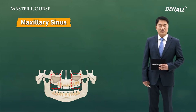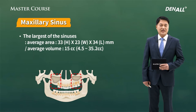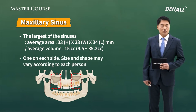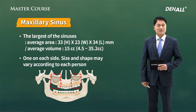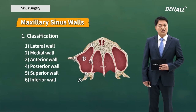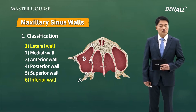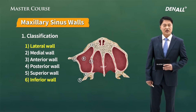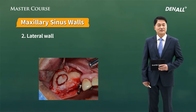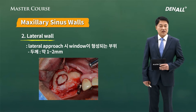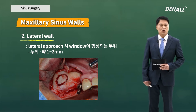The maxillary sinus shape: it is the biggest of the sinuses and the average volume is 15 cc. It exists on the left and right, and size and shape may vary depending on the individual. The most important wall is the lateral wall, which is very important when you do lateral approach. When we do lateral approach, we create a window, and the thickness is approximately 1 to 2 mm, though sometimes it can become thicker.